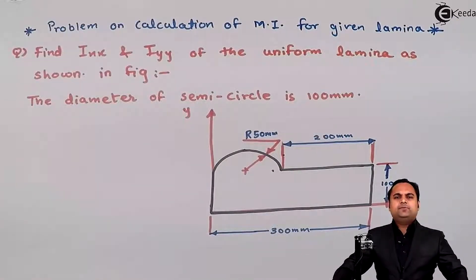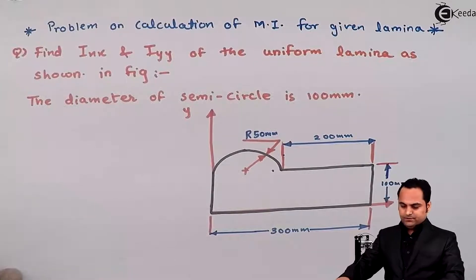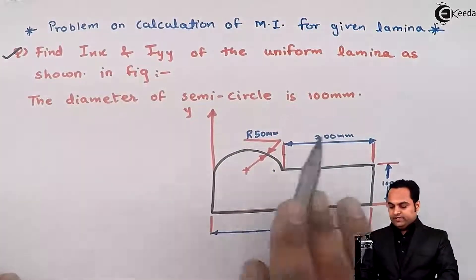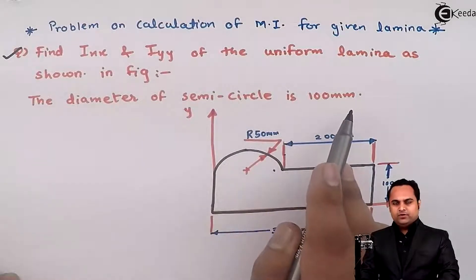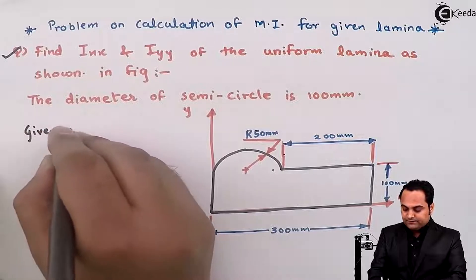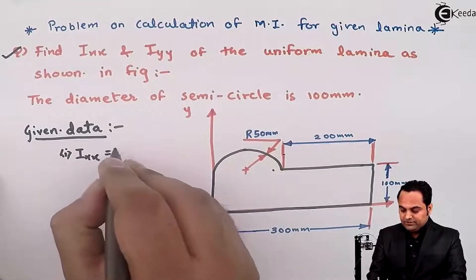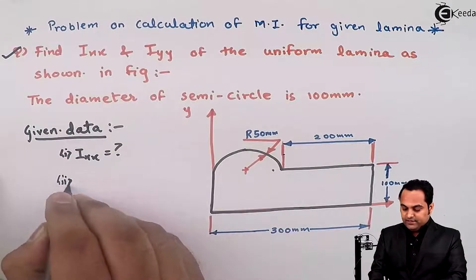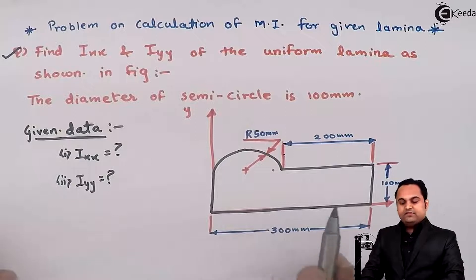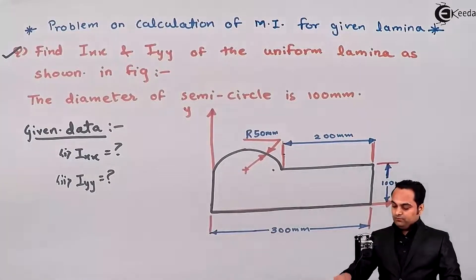Hello, in this video we will see a problem on calculation of moment of inertia for a given lamina. The question asks us to find Ixx and Iyy of the uniform lamina as shown in the figure. The diameter of the semicircle is 100 mm, so the radius is 50 mm.